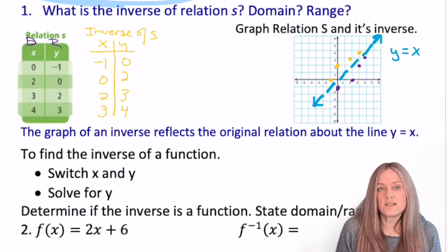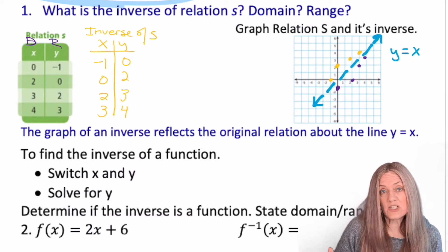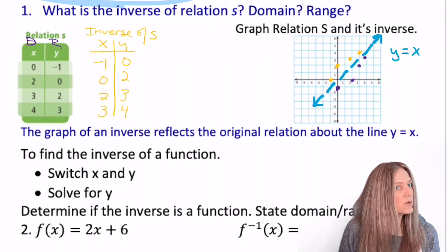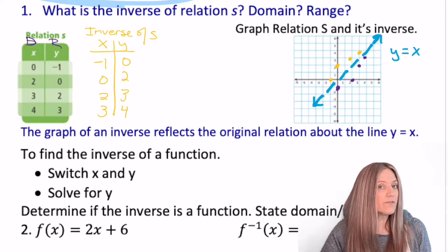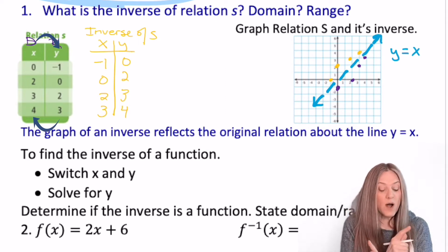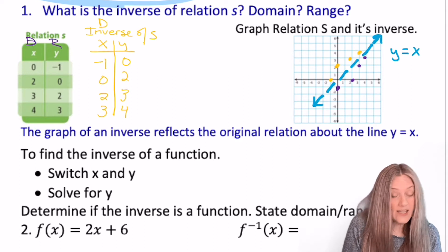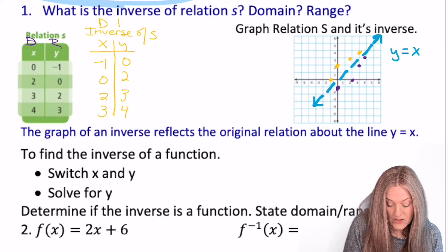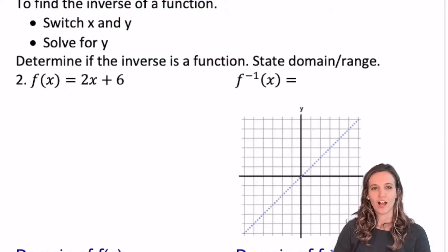Let's emphasize again that in the original relation S, the domain were the x values and the range were the y values, but then in the inverse those swapped. So now the domain are the x values of negative one, zero, two, three, and the range are the y values of zero, two, three, four.